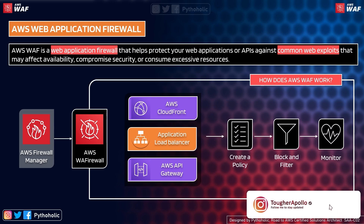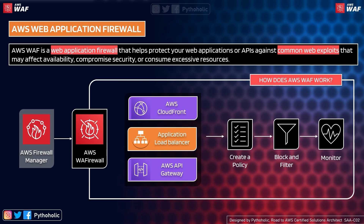Looking at the WAF architecture diagram, we have the Firewall Manager — a security management service that allows you to centrally configure and manage firewall rules across your accounts and applications in AWS Organizations. In a larger organization, there could be hundreds of firewalls needing management, so Firewall Manager centralizes rule updates, security patches, and customization. When adding new applications, you can add them to an existing group with your standards rather than reconfiguring from scratch.